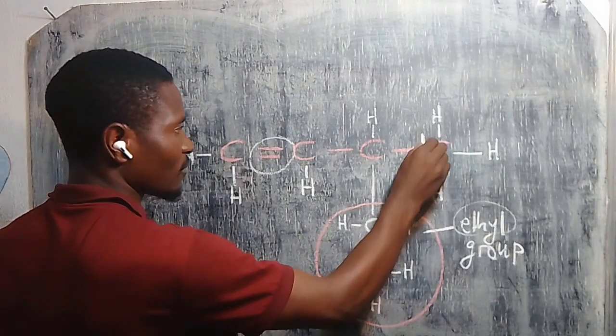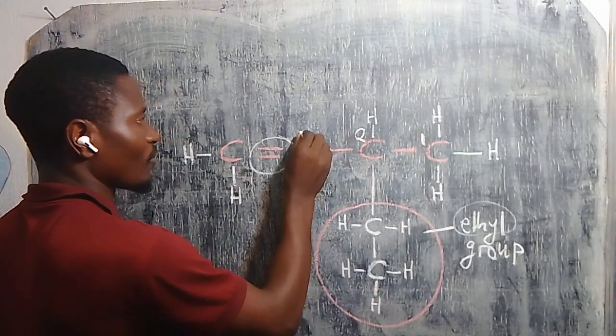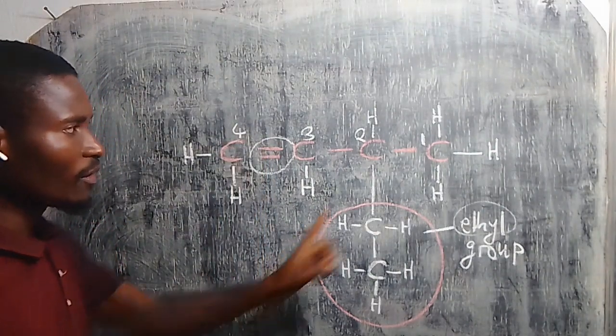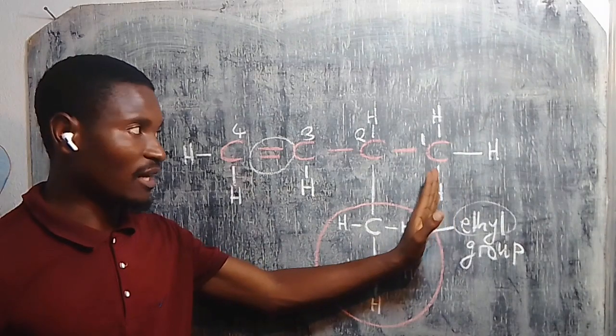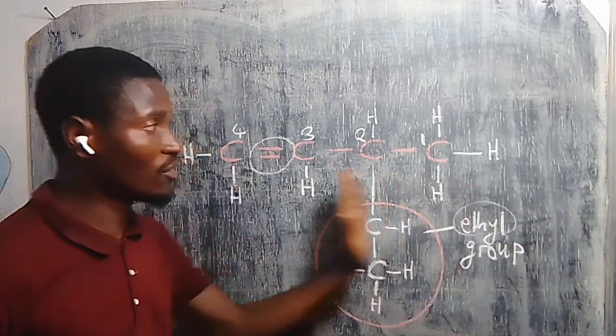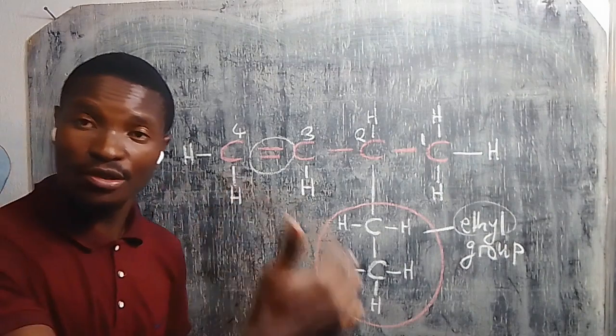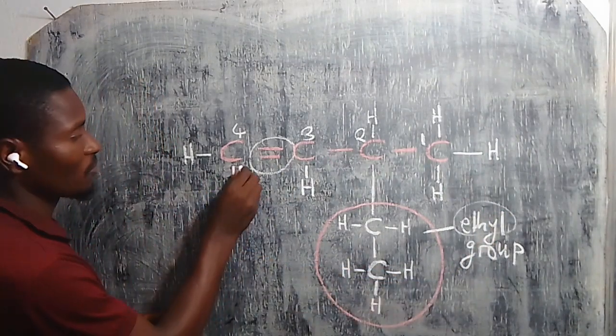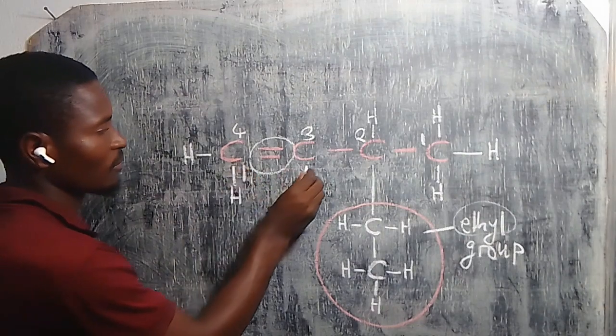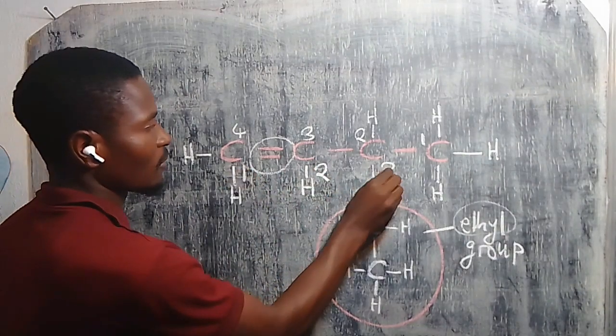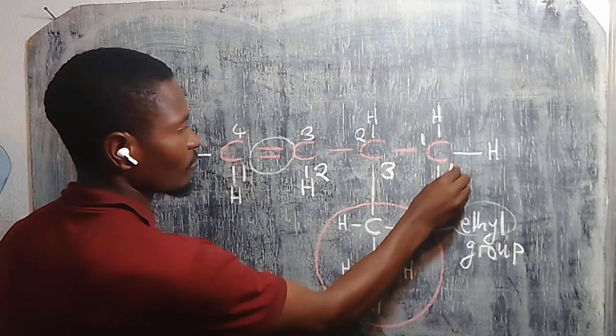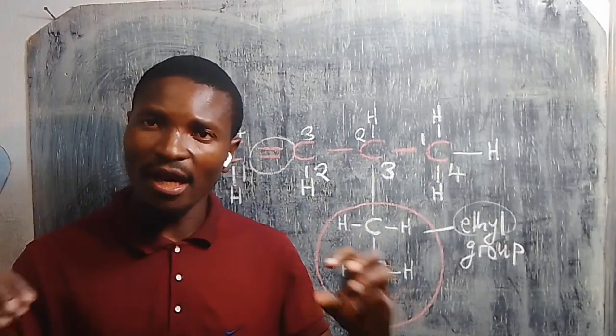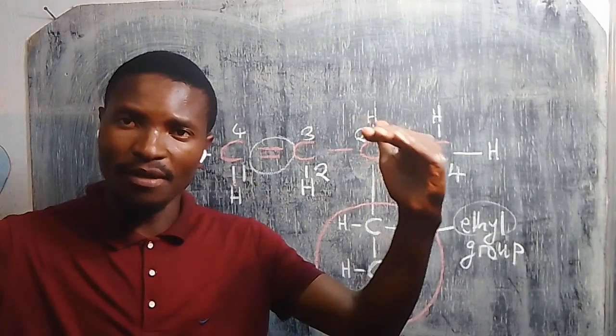I would number it as one, two, three, four. Once you number like that moving from right going to left, you should also do the same moving from left going to right. So this is going to be one, two, three, four.